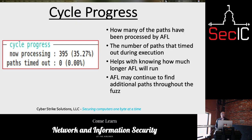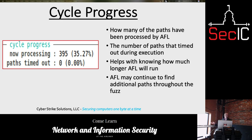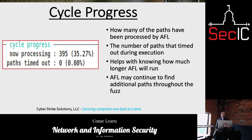Next is the cycle progress, which tells you how many paths have been processed by AFL, including the number that timed out during execution. From this screen we can see 395 paths have been processed, estimated at 35% of the overall paths. This gives you an idea of how long AFL will run — not gospel, but an estimation. AFL may continue to find additional paths as progress continues.